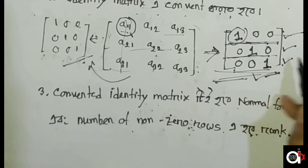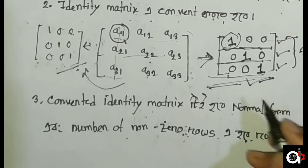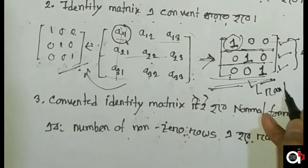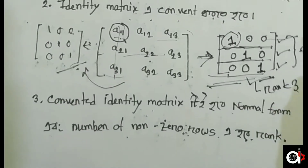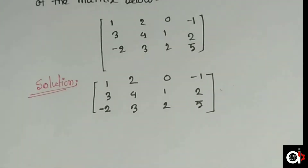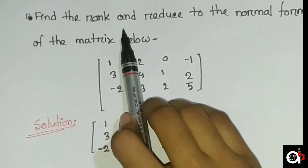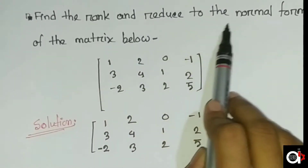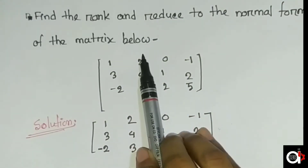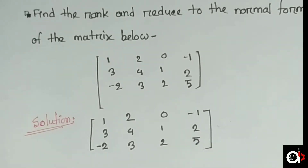I will make an example. Find the rank and reduce to the normal form of the matrix below. Here we have a matrix that we have to reduce to normal form.